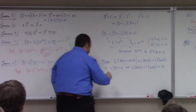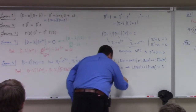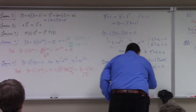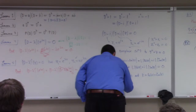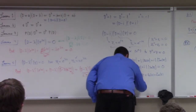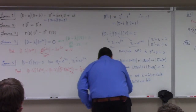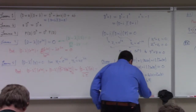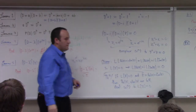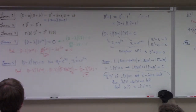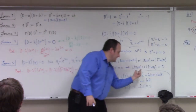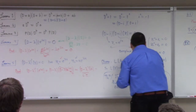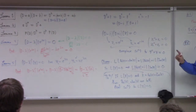So the theorem is: if L of z equals zero and z equals Re(z) + i·Im(z), then the real part of z and the imaginary part of z are both real solutions to L(y) = 0. Because this single complex equation — L(Re(z)) + i·L(Im(z)) = 0 — simultaneously tells me both the real part is a solution and the imaginary part is a solution. So whenever I find a complex solution to a linear differential equation, I automatically get two real solutions.